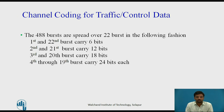Channel coding for traffic or control data: traffic data is processed in blocks of 240 bits every 20ms. For supported data rates of 9.6 kbps, 4.8 kbps, and 2.4 kbps, each block is augmented by 4 tail bits. A convolution code produces a block of 488 bits (244 × 2). The 488 bits are spread over 22 bursts: 1st and 22nd carry 6 bits, 2nd and 21st carry 12 bits, 3rd and 20th carry 18 bits, and 4th through 19th bursts carry 24 bits each.